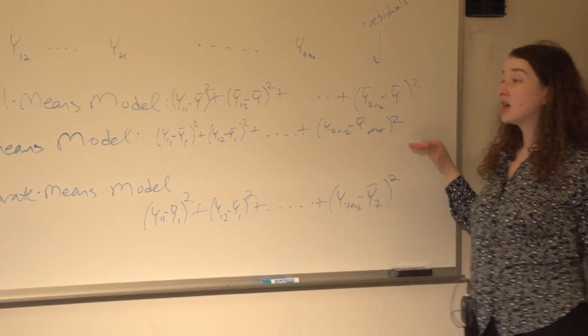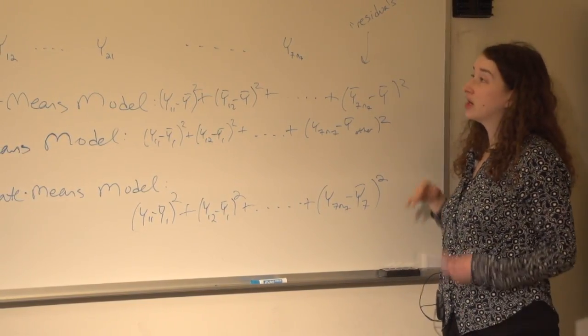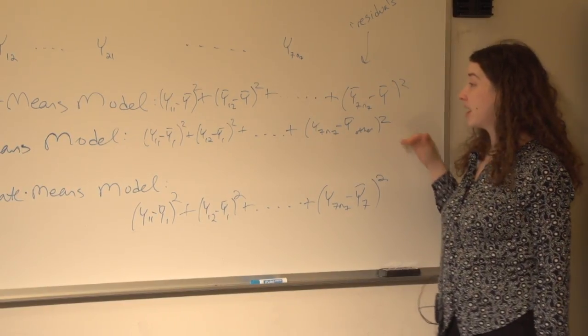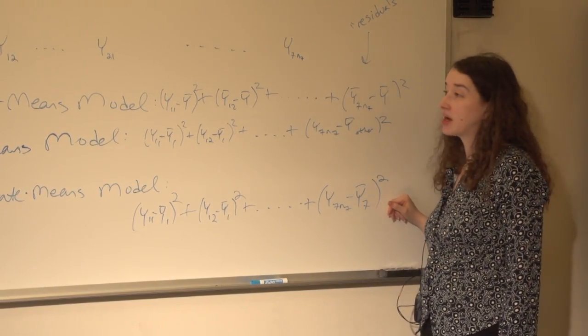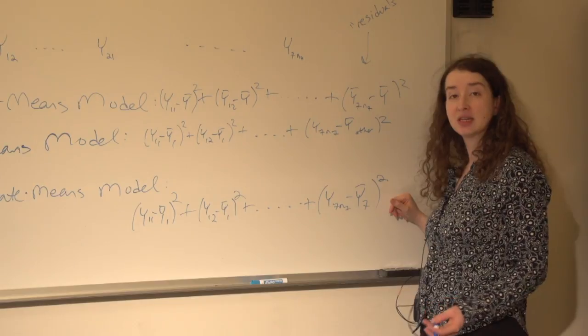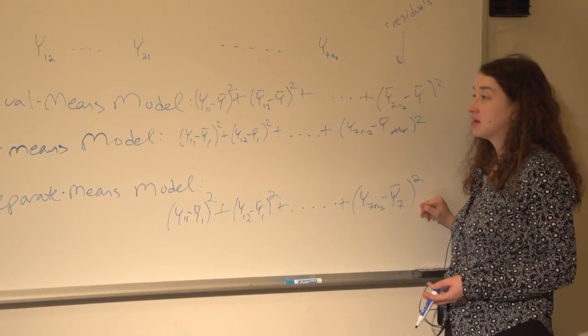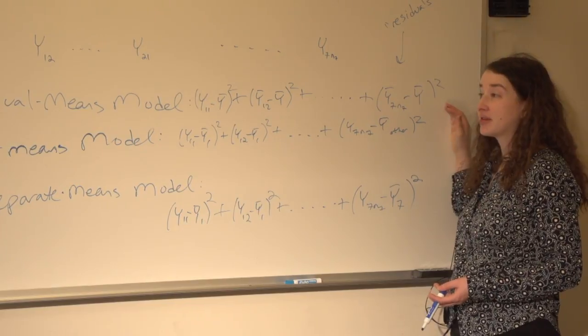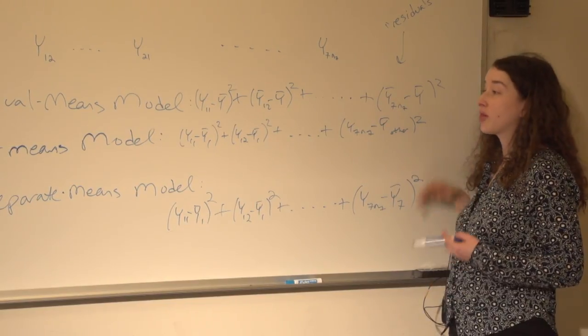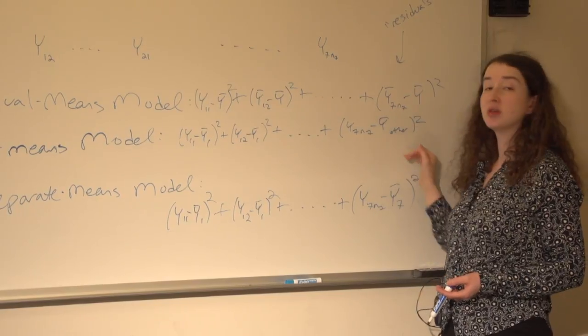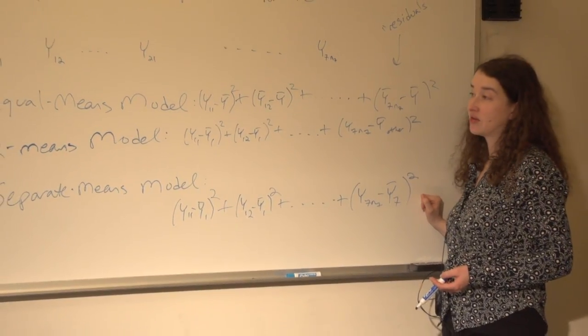So now we have yet another sum of squared residuals. And what an ANOVA or a regression will do is allow us to compare the sums of squared residuals from these different models in order to conduct hypothesis tests, telling us whether, for example, we have enough evidence to reject the null hypothesis that all the means are equal, or whether we have enough evidence to reject the null hypothesis that 2 means are enough. We don't need 7 different means.